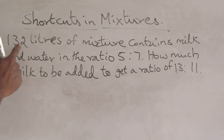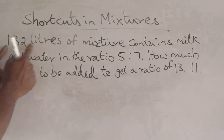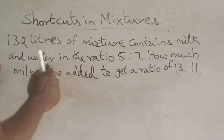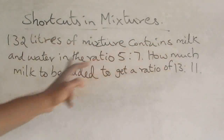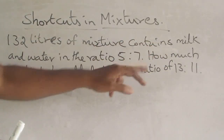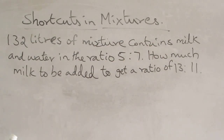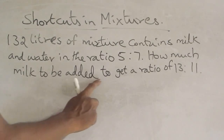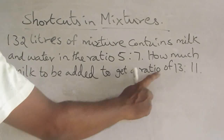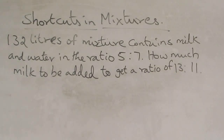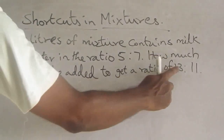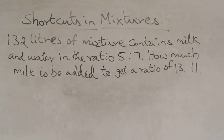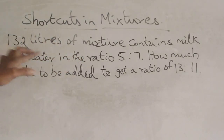We have 132 liters. Milk and water are in the ratio 5 is to 7. How much milk should be added to get a ratio of 13 is to 11? The current ratio is 5 is to 7, and the target ratio is 13 is to 11.